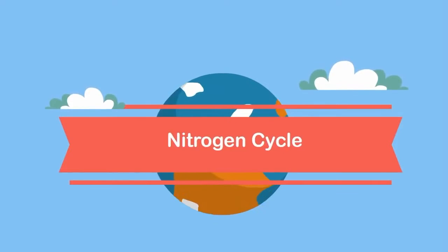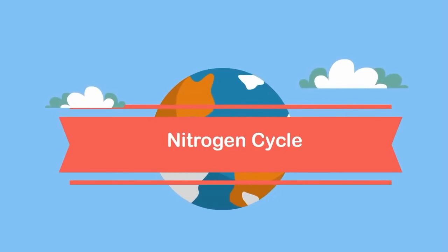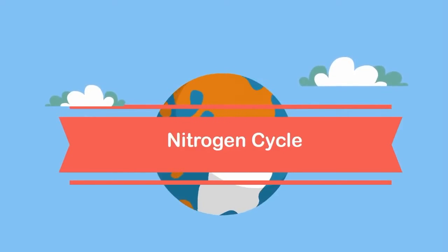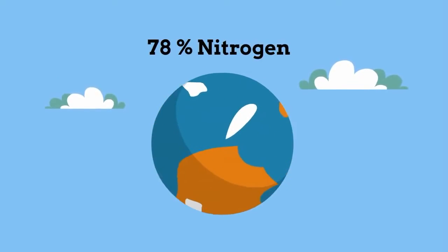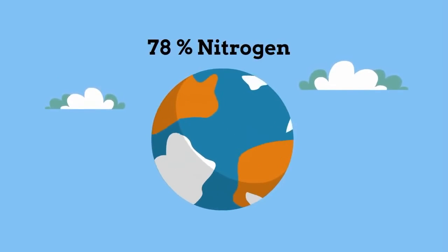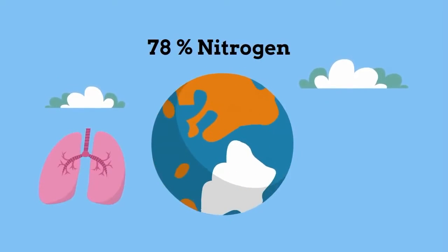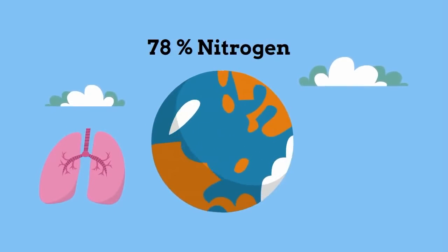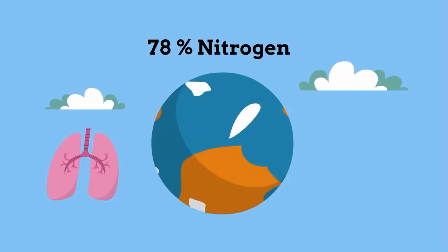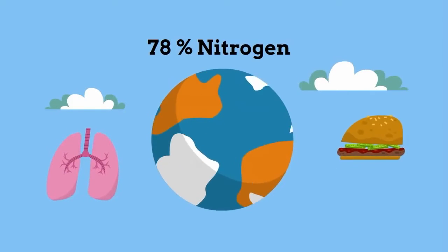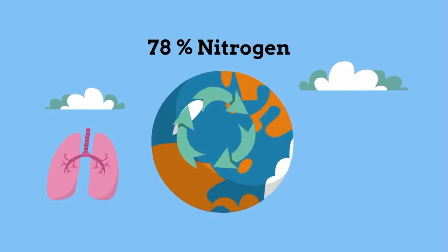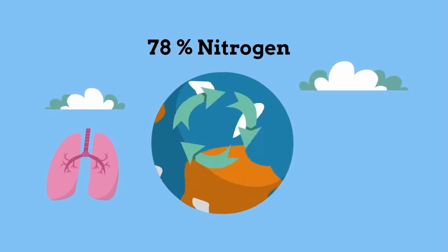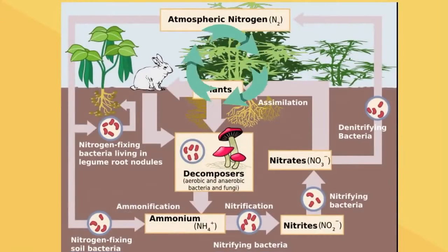In this video, I would like to talk about the nitrogen cycle. Our atmosphere is made up of 78% nitrogen. We need nitrogen for our DNA and for proteins, but we just can't breathe in nitrogen like oxygen — we must absorb our nitrogen in our food. Nitrogen follows a cycle where it travels from the atmosphere to the soil to animals and back.